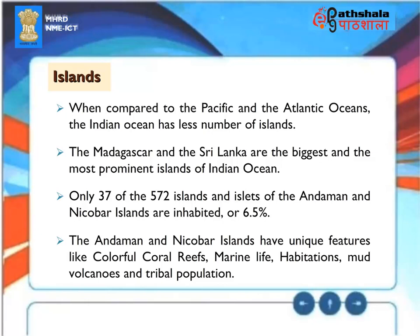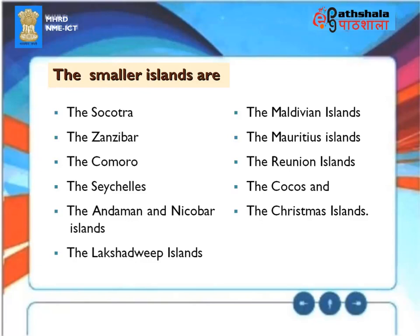Islands. When compared to the Pacific and the Atlantic Oceans, the Indian Ocean has fewer islands. Madagascar and Sri Lanka are the biggest and the most prominent islands of the Indian Ocean. Only 37 of the 572 islands of the Andaman and Nicobar Islands are inhabited, or 6.5%. The Andaman and Nicobar Islands have unique features like colourful coral reefs, marine life, habitations, mud volcanoes, and tribal population. The smaller islands are the Socotra, the Zanzibar, the Comoro, the Seychelles, the Andaman and Nicobar Islands, the Lakshadweep Islands, the Maldivian Islands, the Mauritius Islands, the Reunion Islands, the Cocos, and the Christmas Islands.